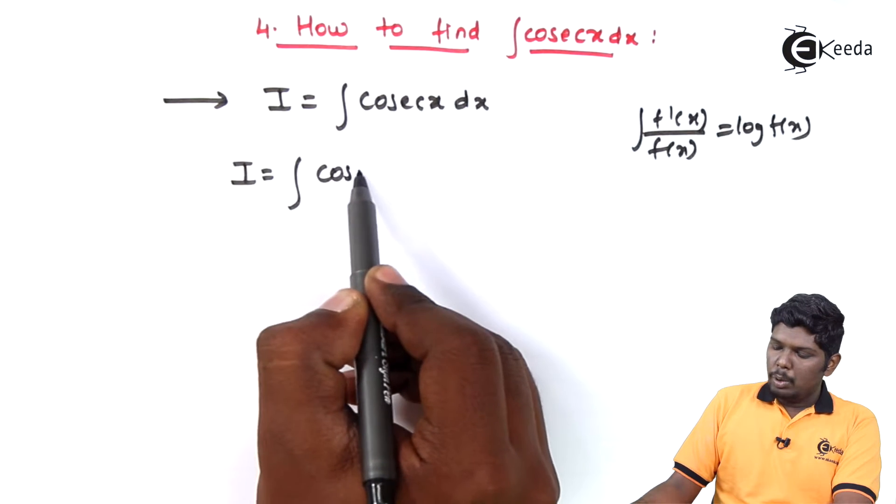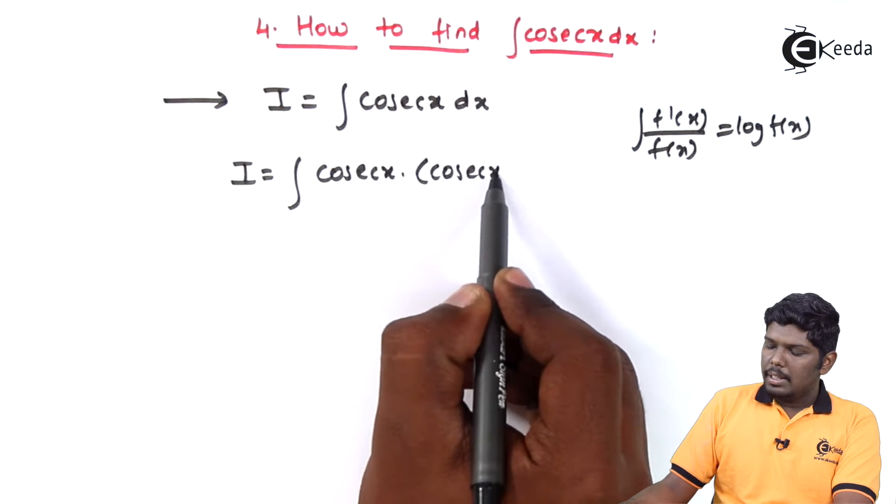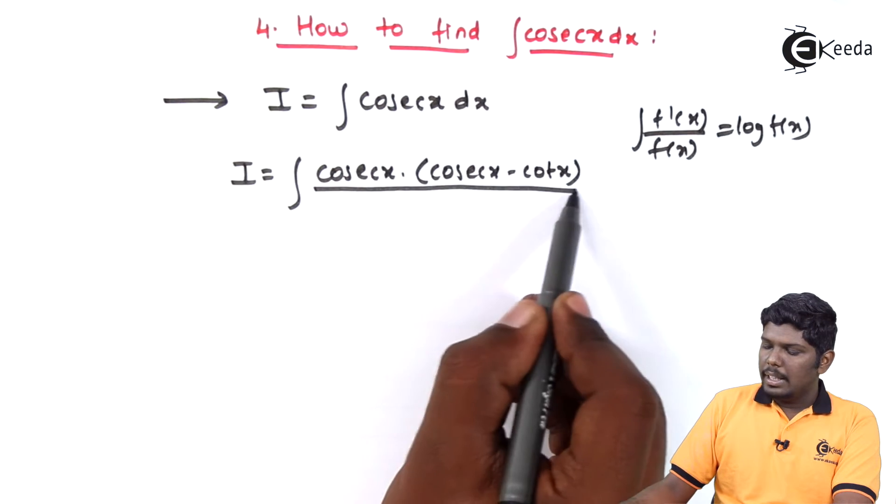we are going to multiply cosec x with a term cosec x minus cot x and balance it by dividing the same.